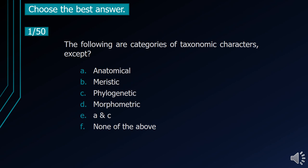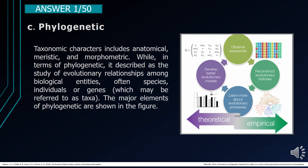Number 1. The following are categories of taxonomic characters, except: A. Anatomical. B. Meristic. C. Phylogenetic. D. Morphometric. E. A and C. F. None of the above. The correct answer is letter C, Phylogenetic. Taxonomic characters include anatomical, meristic, and morphometric. Phylogenetic is described as the study of evolutionary relationships among biological entities, often species, individuals, or genes which may be referred to as taxa.